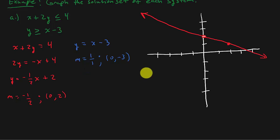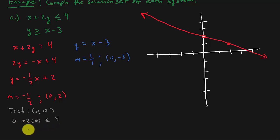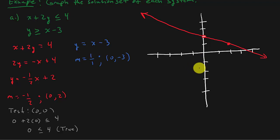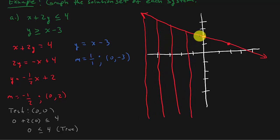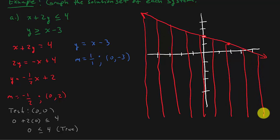Let's graph the first one in red. Plot (0, 2), go down 1 and to the right 2. This line is solid. Choosing test point (0, 0): 0 plus 2 times 0 is less than or equal to 4, so 0 is less than or equal to 4 — a true statement. I shade that side of the graph. When shading, use lines rather than solid fill — you'll see why in a minute.